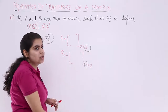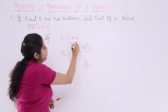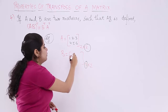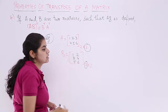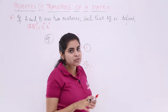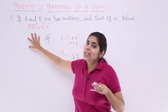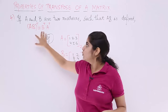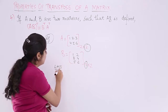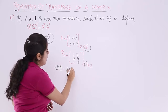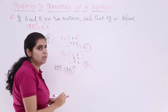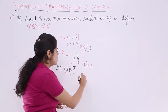Matrix A has 2 rows and 3 columns, so it is [1, 2, 3; 4, 5, 6]. Matrix B has 3 rows and 2 columns, so it is [1, 2; 3, 4; 5, 6]. Now the property says: if you multiply AB and then take the transpose, it is equal to B transpose times A transpose. Let us take the LHS first and find AB.